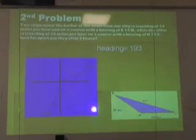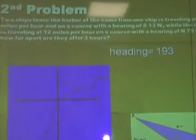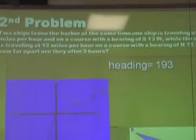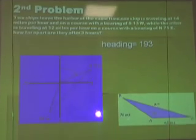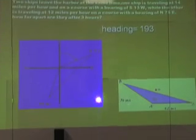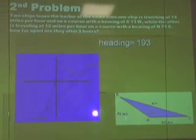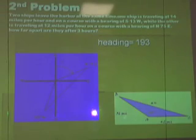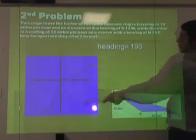So the second problem is two ships leave the harbor at the same time. One ship is traveling at 14 miles per hour on a course with a bearing of south 13 west, while the other is traveling at 12 miles per hour on a course with a bearing of north 75 east. How far apart are they after three hours? So what I did here is drew a graph.